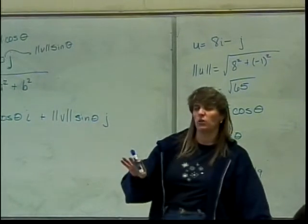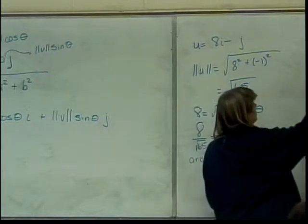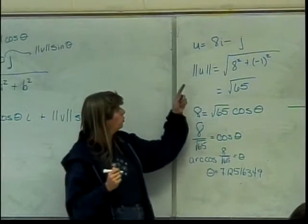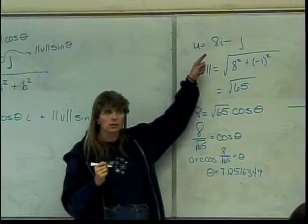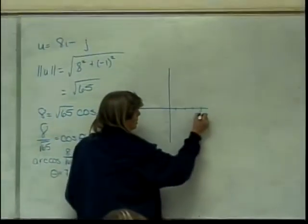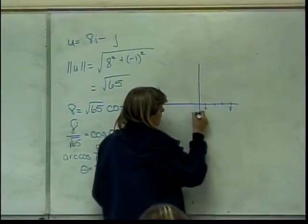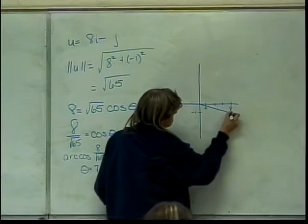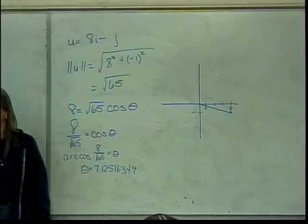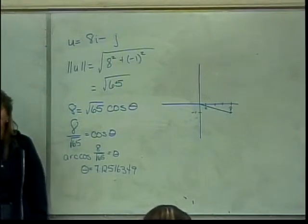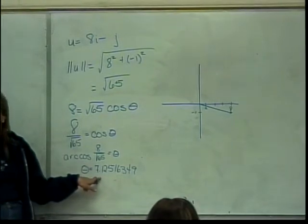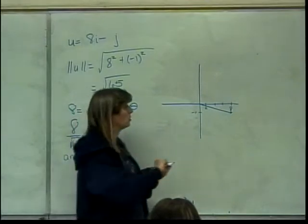Why not? Well, let's draw a picture of where this vector is pointing. There's my x and y axis. What are the end points of this vector? 8 comma negative 1. 8 comma negative 1. 2, 4, 6, 8. Negative 1. Right here. Is that 7 degrees? No, it's not.